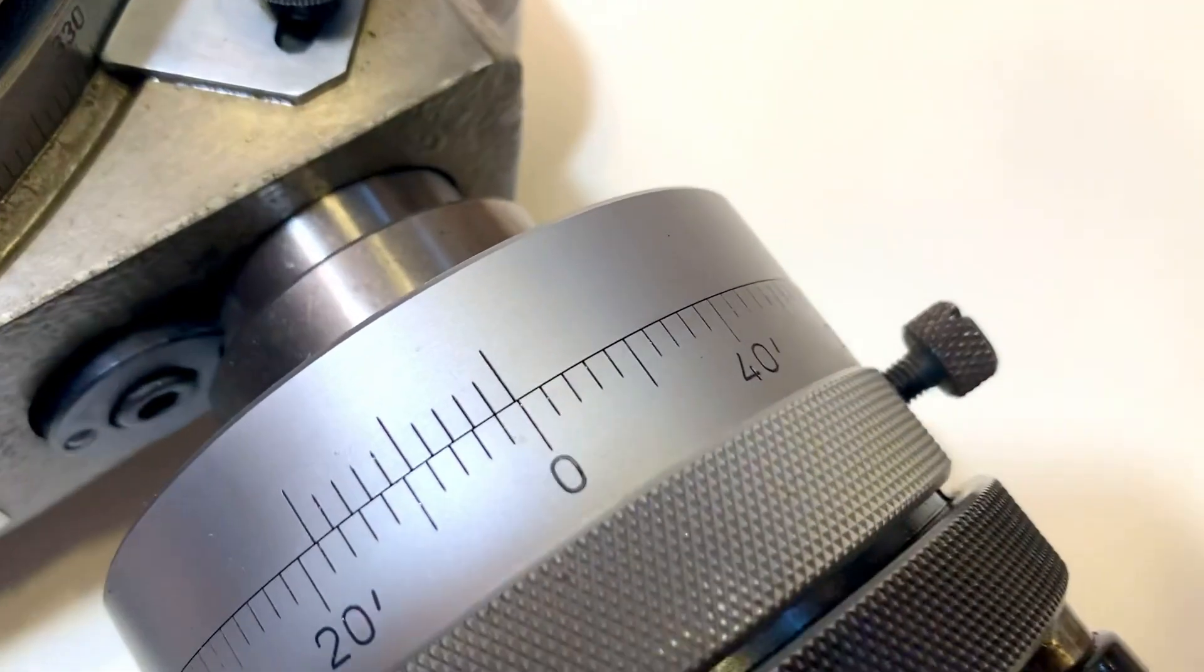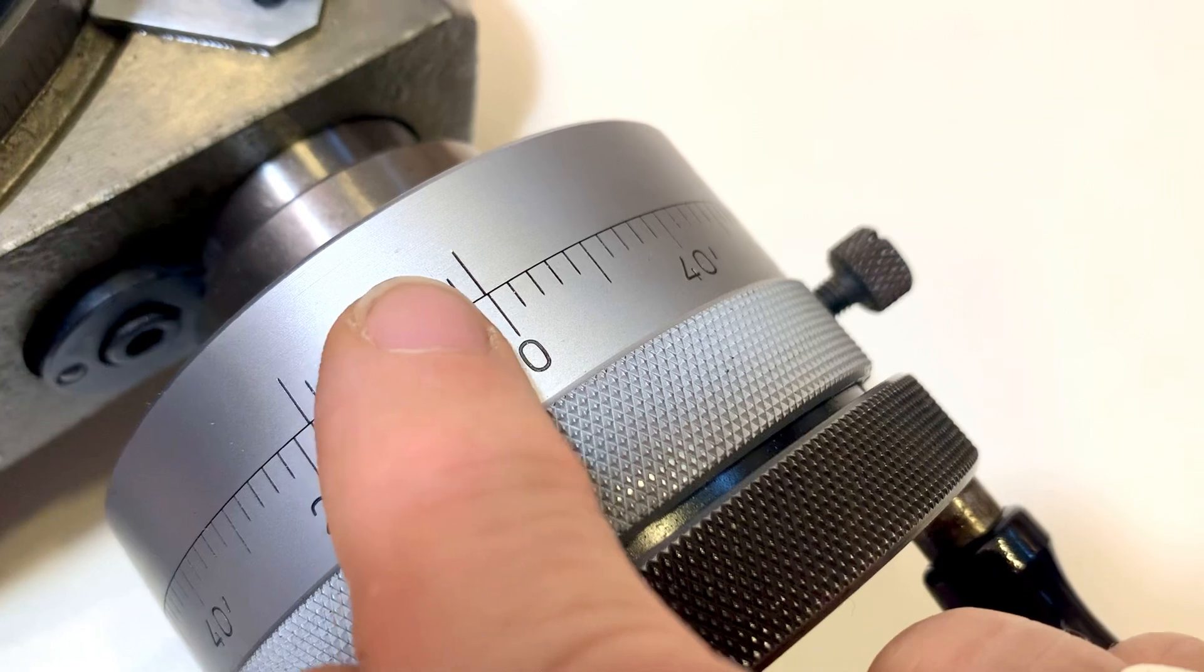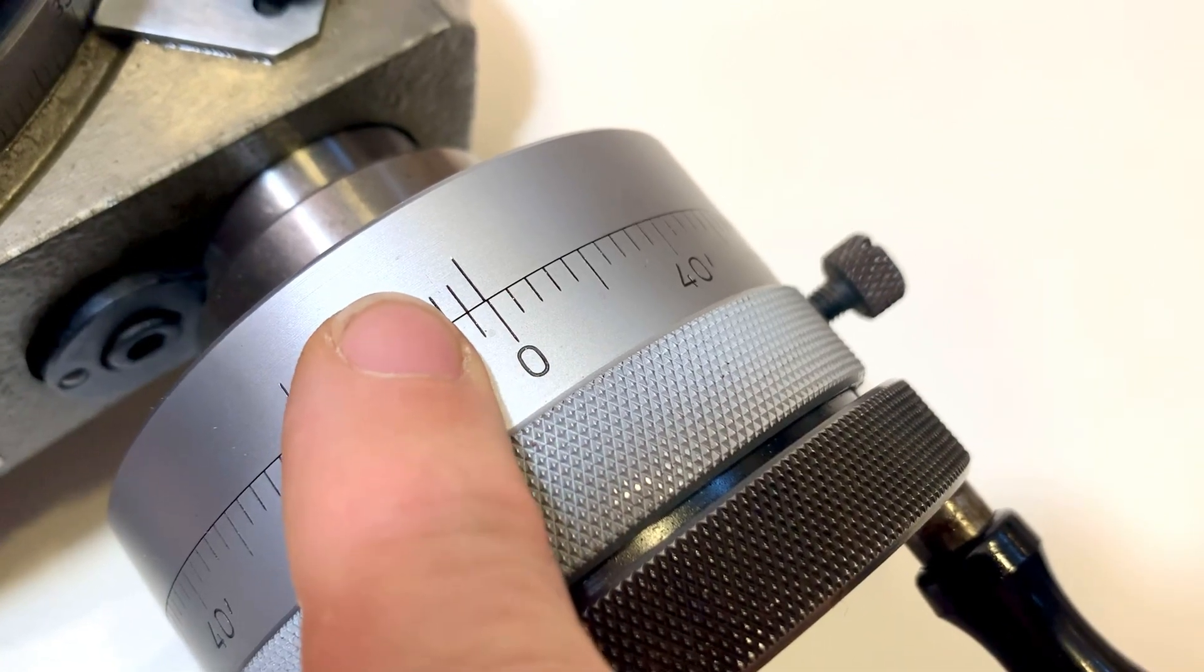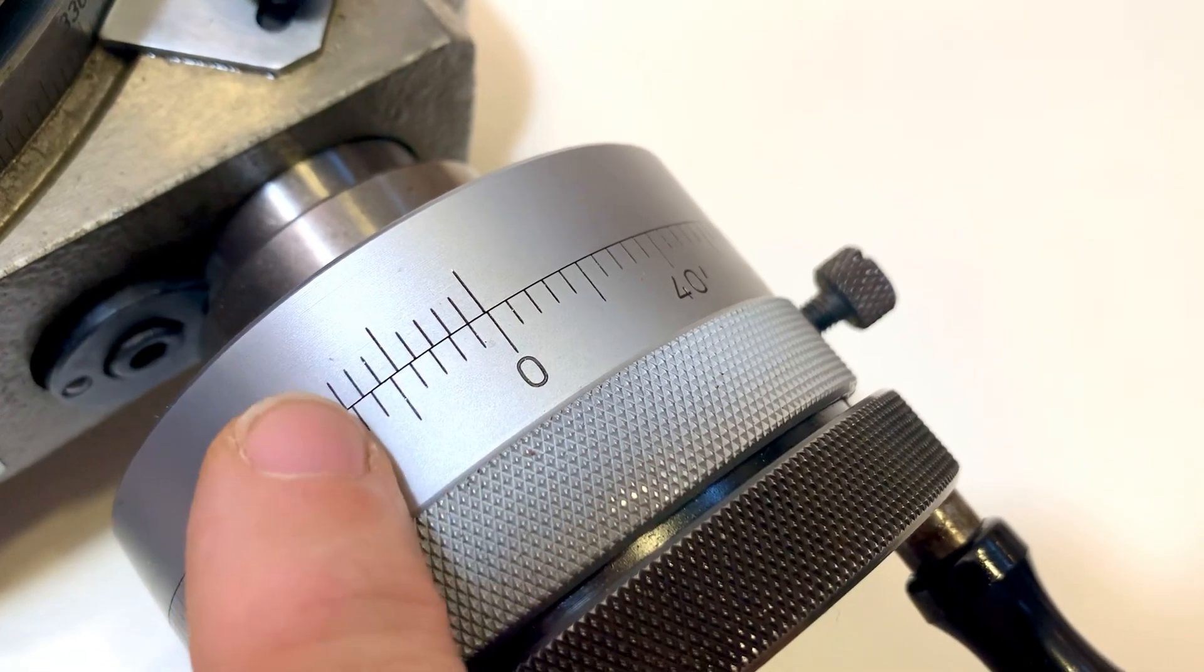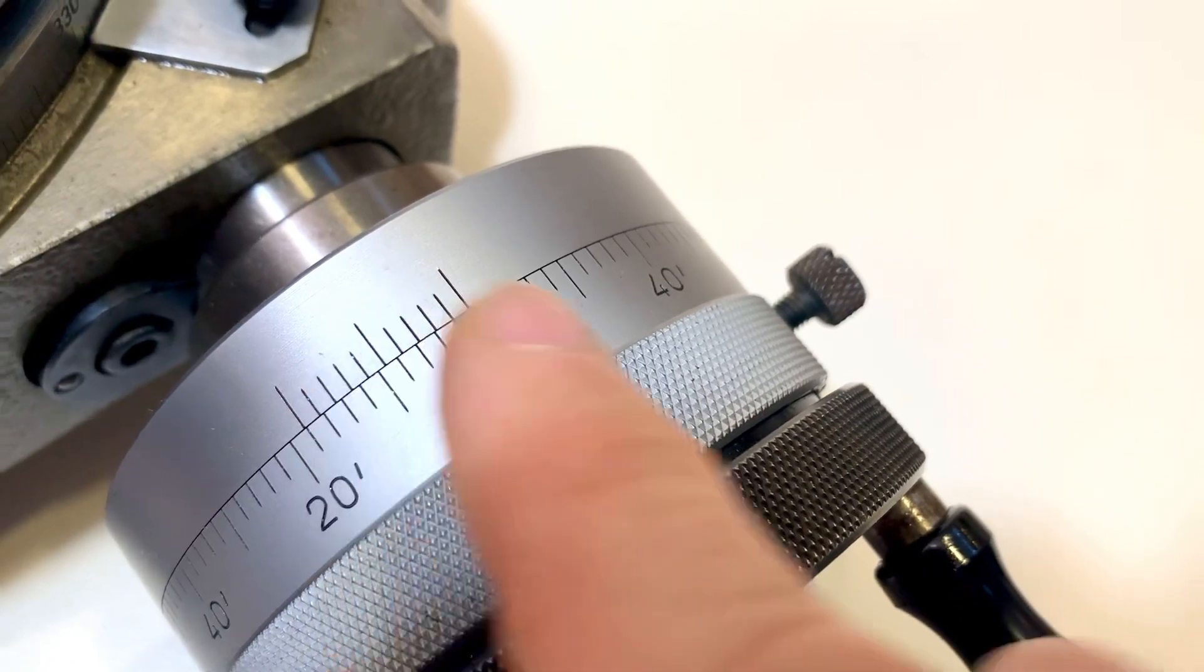So when I do it like this, I can have a readout of six seconds because it's exactly between this line and this line.